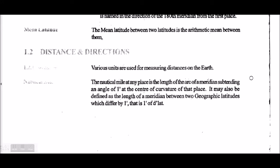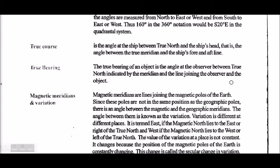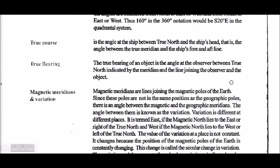This is the definition of one nautical mile. True course is the angle at the ship between the true north and the ship's heading. That is the angle between the true meridian and the ship's fore-and-aft line. This is true course.